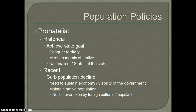So let's talk specifically about pronatalist policies. Historically, what we've seen is governments, dictators, or some sort of strongman trying to achieve a state goal. One example that comes directly to mind is Adolf Hitler during World War II. He was trying to conquer more territory in Europe — he wanted to take over Europe and potentially the world. So he needed to grow the German population, which had been depleted after World War I, not only to get the economy running but also to infiltrate other countries and take over those territories.